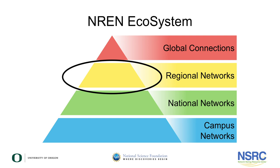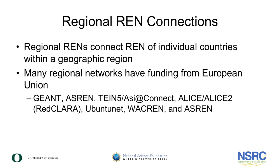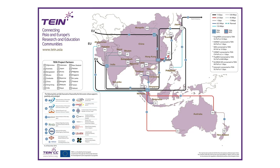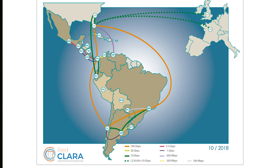Let's now talk about regional networks. Regional networks connect the national research and education networks in a specific geographic region. Many of these regional networks have been developed with funding from the European Union. There are a number of different regional RENs. This is GEANT, the pan-European network that serves most of the countries in Europe. And this is TANE, that serves much of Asia along with Australia and New Zealand. And REDCLADA, that serves South and Central America.